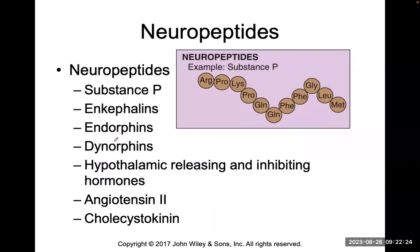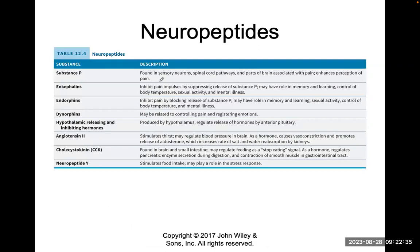Let's look at some neuropeptides like substance P, enkephalins, and angiotensin. Substance P is found in sensory neurons, found in the spinal cord and parts of the brain, and is associated with pain. Substance P enhances your perception of pain — it allows you to feel more pain. There are things that can be done to block substance P or to burn them out.